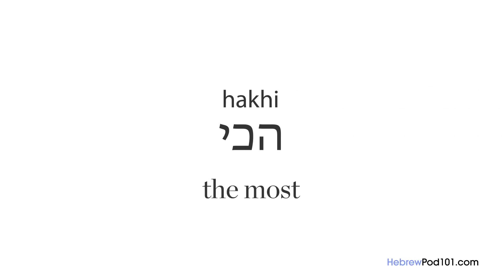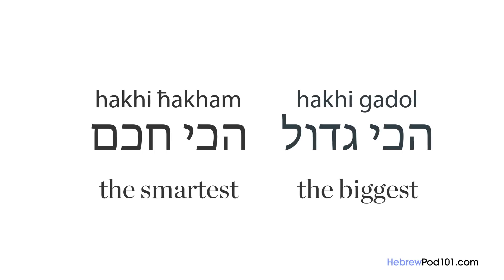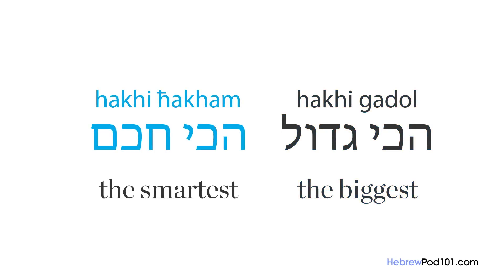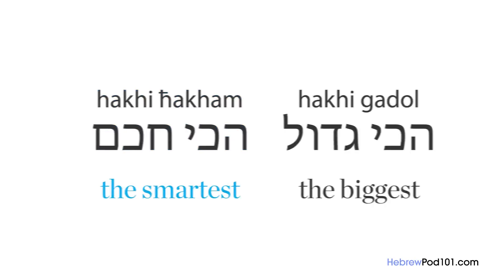The next word is the colloquial version of 'be'yoter': 'ha'chi.' This adverb means 'the most' and will always come before the adjective. For example: 'ha'chi gadol' — the biggest, 'ha'chi chacham' — the smartest.